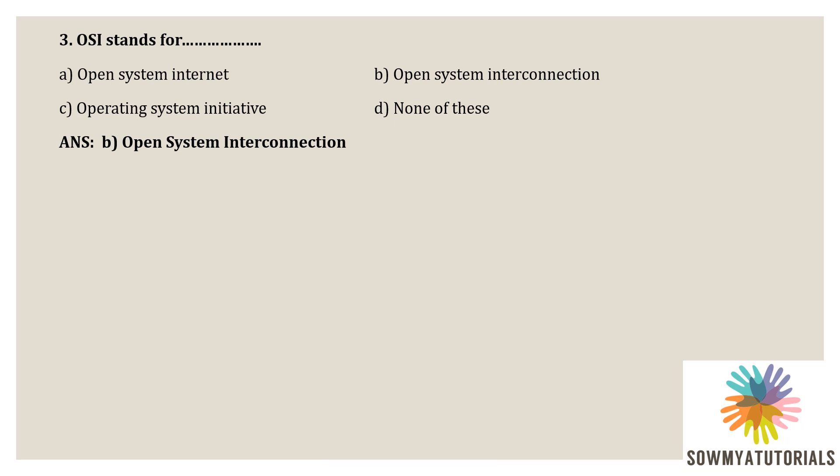All these seven layers work collaboratively to transmit the data from one person to another across the globe. The seven layers are: physical layer, data link layer, network layer, transport layer, session layer, presentation layer, and applications layer. These are all the seven layers of an OSI reference model.